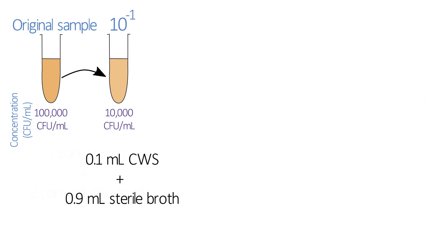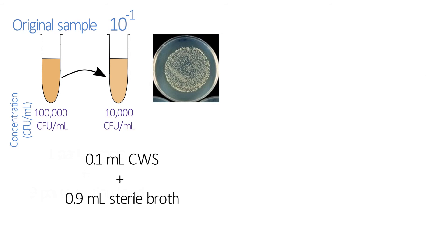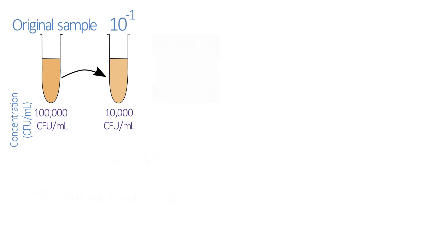However, if we plate this dilution out, we might still have too many colonies to count, so we're going to have to set up another dilution. The easiest way to do this is to do exactly the same thing again, but this time to dilute the ten to the minus one dilution by tenfold to give a ten to the minus two dilution.